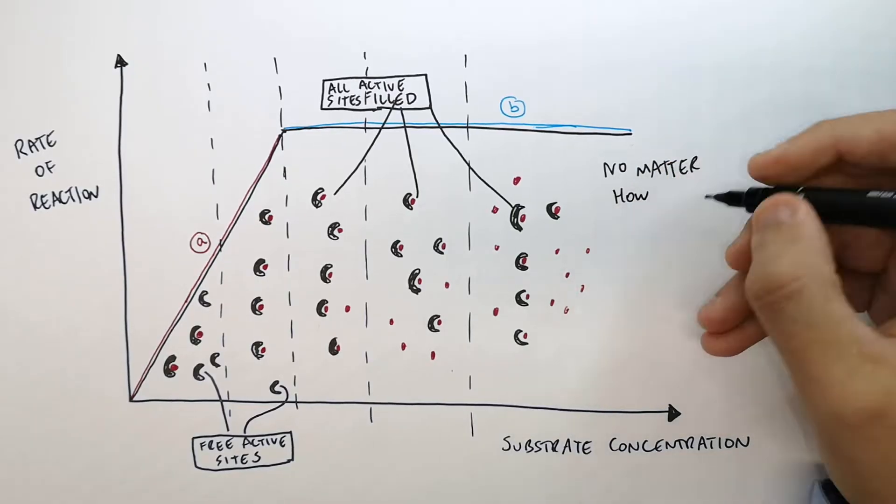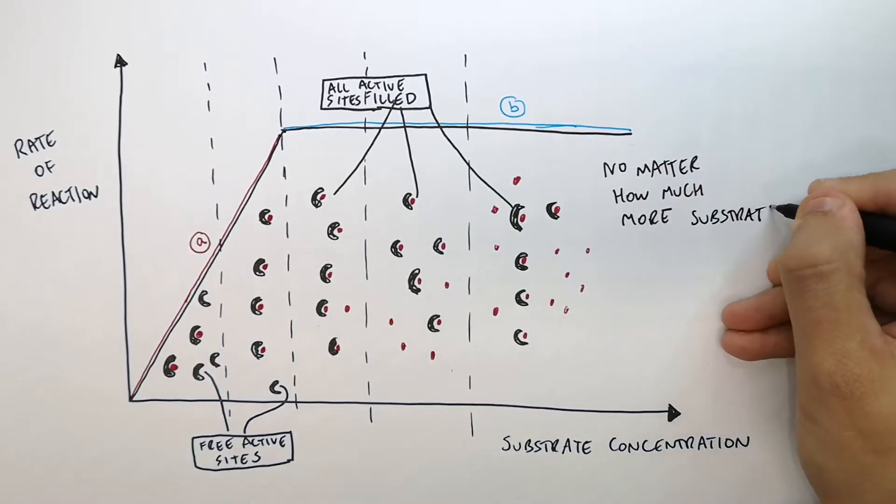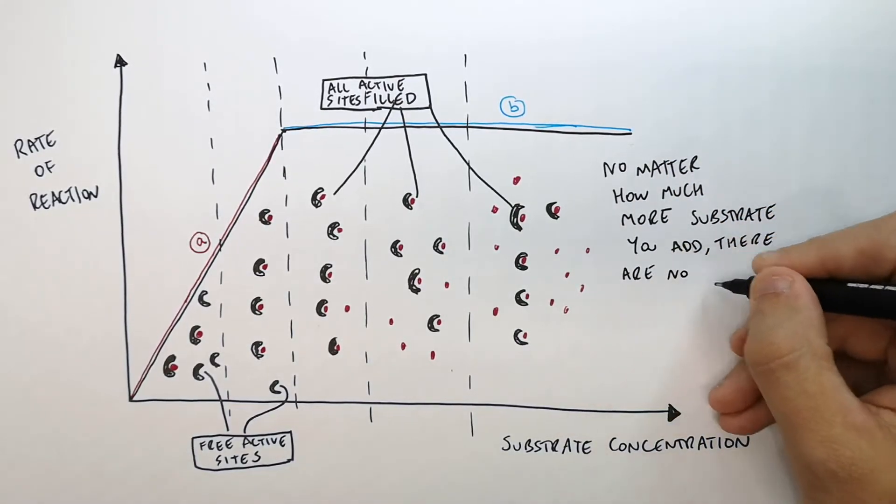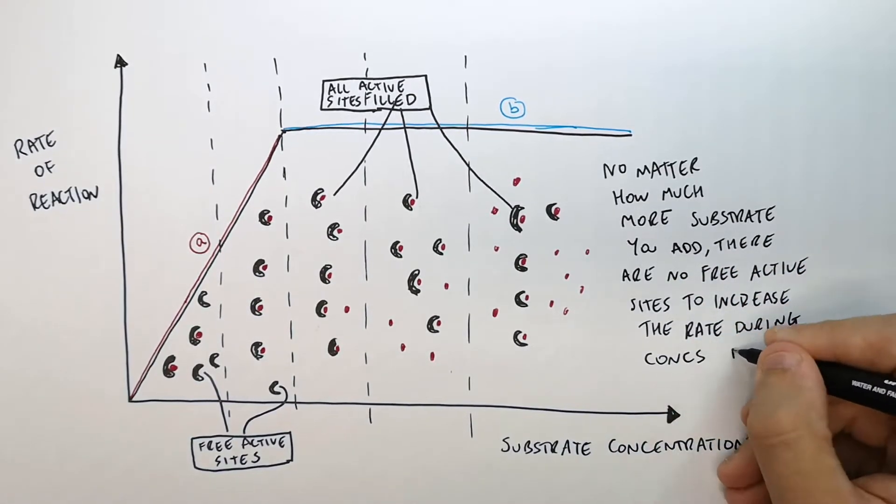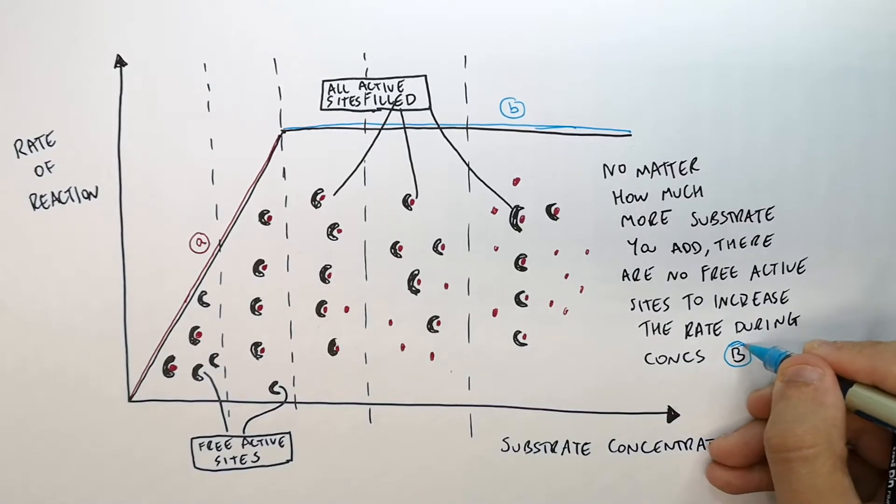So no matter how much more substrate you add, there are no free active sites to increase the rate during concentrations B, where the line is flat.